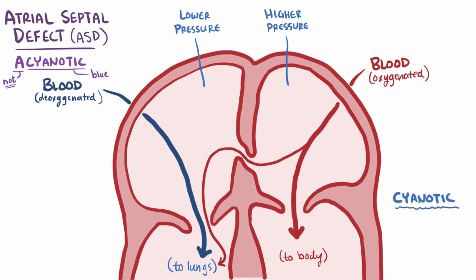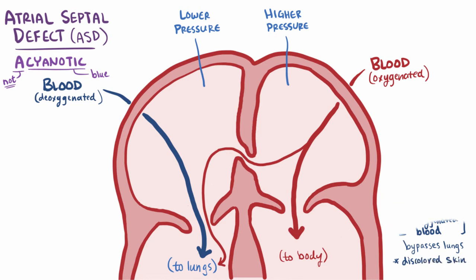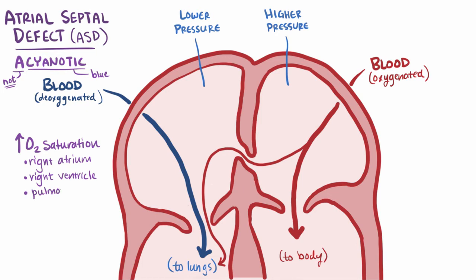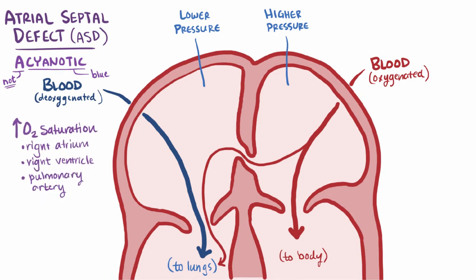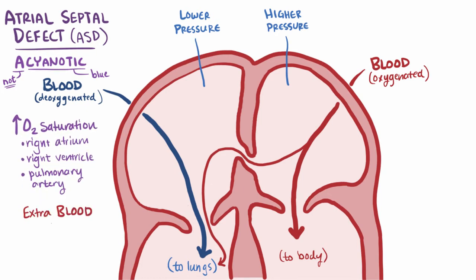In contrast, a cyanotic heart defect allows deoxygenated blood to bypass the lungs and make it out to the body, causing a blue or purplish discoloration of the skin, which is not the case here. With an ASD, you'll see an increase in oxygen saturation of the blood in the right atrium, the right ventricle, and the pulmonary artery. This extra blood volume passing by the pulmonic valve also causes a delay in the closure of the pulmonic valve relative to the aortic valve closure, and this slight delay can be heard via auscultation as a splitting of the S2 sound, as well as a systolic murmur in some cases.